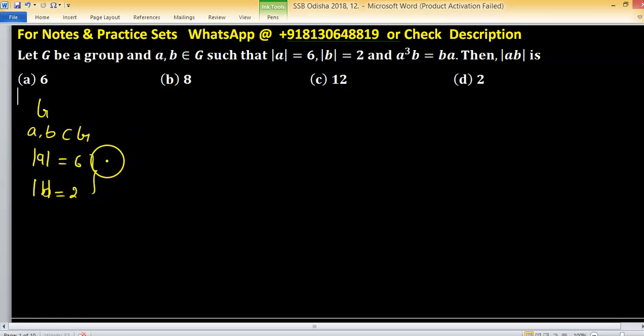What does it mean? Order of a equals to 6 means 6 is the smallest positive integer such that a raised to the power 6 equals to identity and b square equals to identity. This is coming from the definition of order.